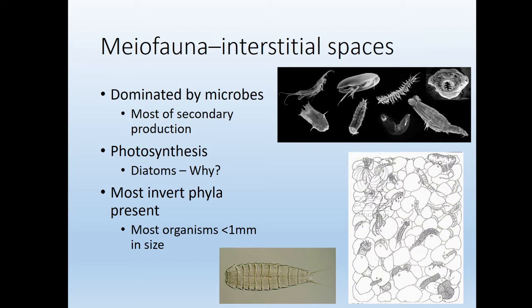Going underground, the interstitial spaces are chock full of meiofauna — extremely small organisms dominated by microbes, which drive most secondary production. There will also be some photosynthesis from marine diatoms, which are extremely abundant in the top layer of sand. Green algae or soft-bodied algae can't survive here because of water movement and the sand whipping around; unless you have a hard glass silica cell wall like diatoms, you'll get crushed. That's why diatoms dominate these systems.